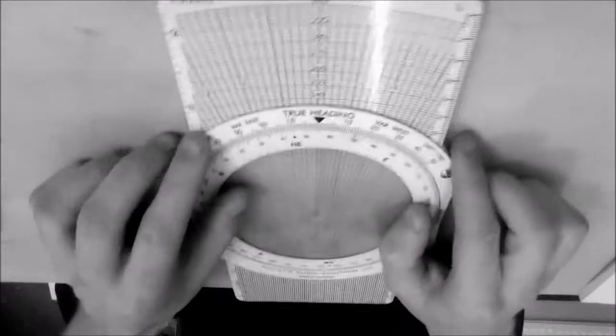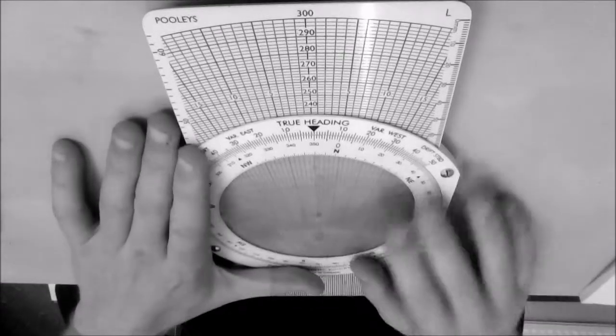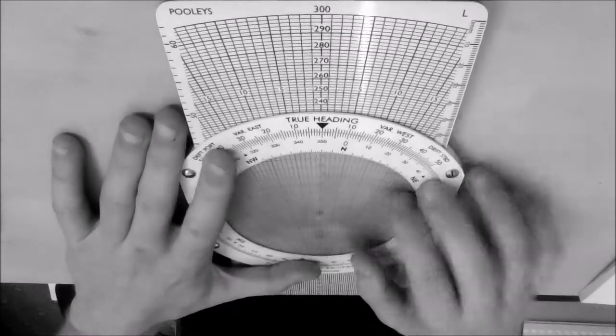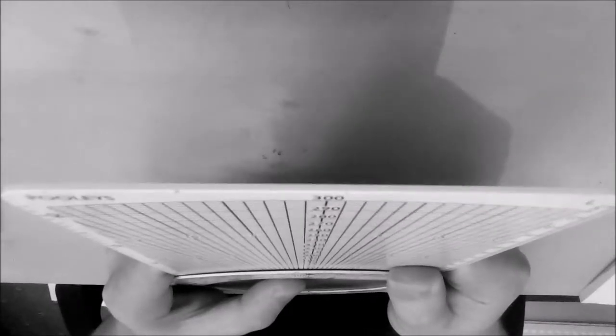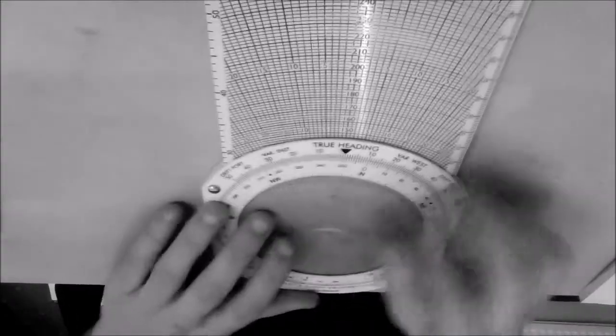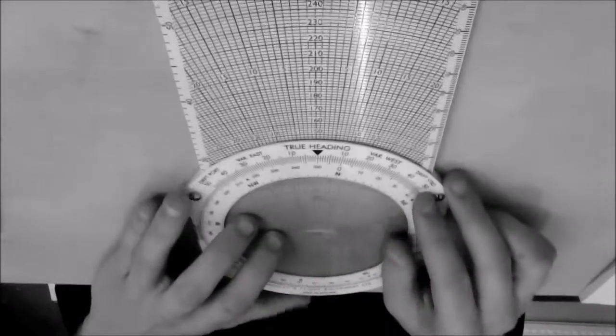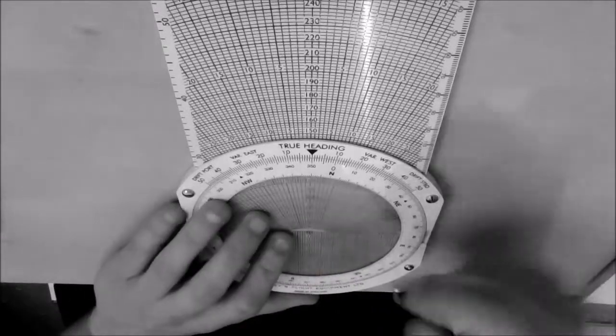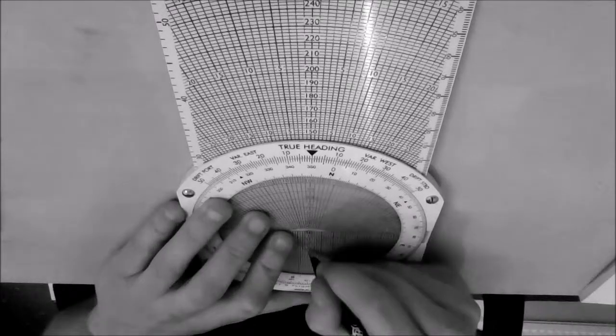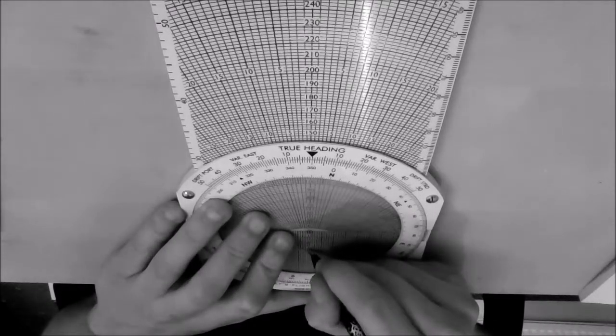And we'll then set up our wind. So we go to 350 on the heading, slide it down to our wind line at the bottom so it sits on zero, and mark on 30 knots which is there.